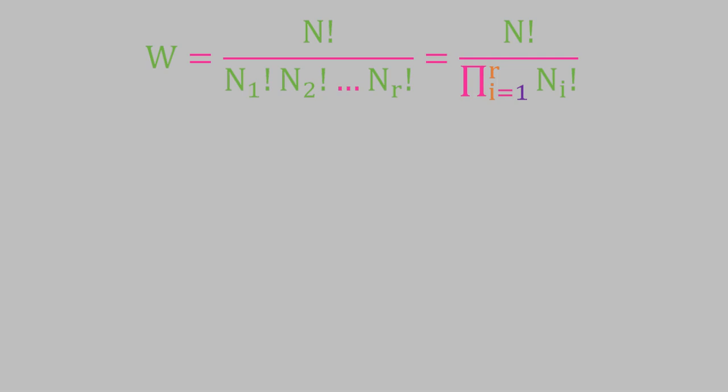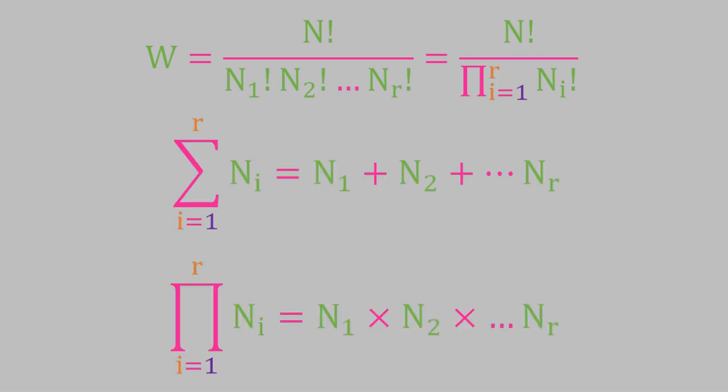Here, the capital Π is the symbol we use for the product of a series of different quantities. Just as we use the symbol sigma to indicate a sum of quantities, Π is used to indicate a product. Let's try using this equation.